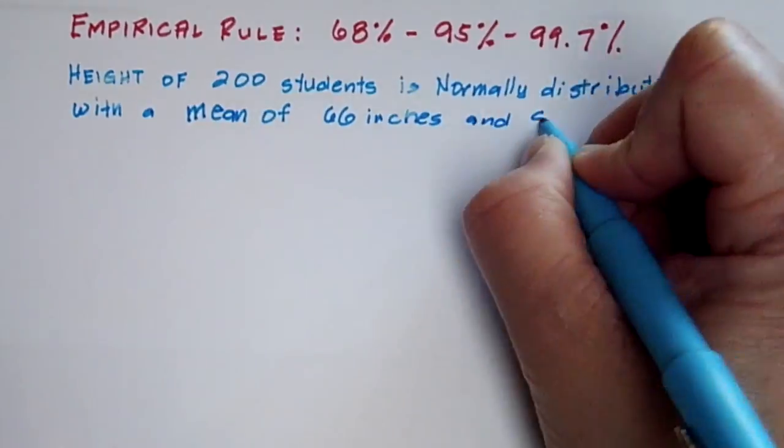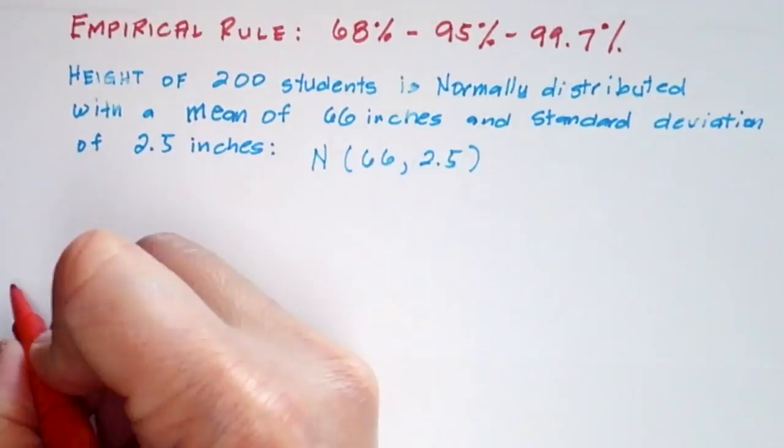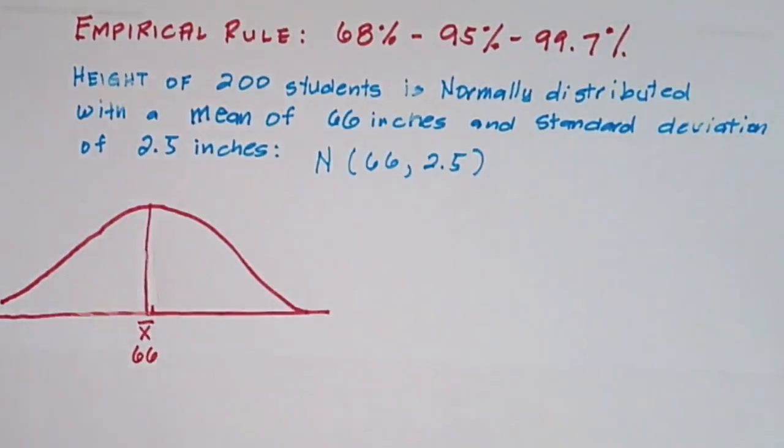Suppose we have 200 students with a normally distributed height at mean of 66 inches and standard deviation of 2.5.